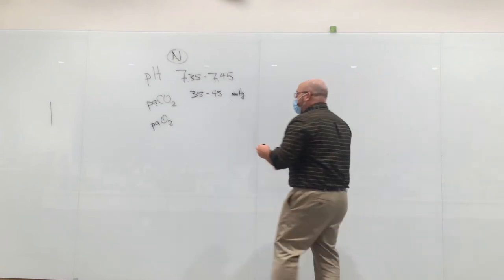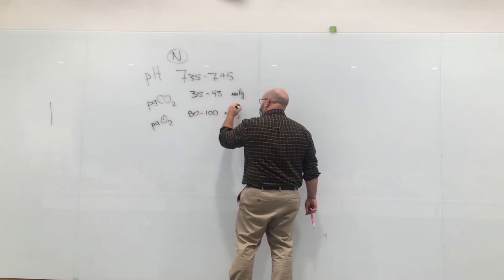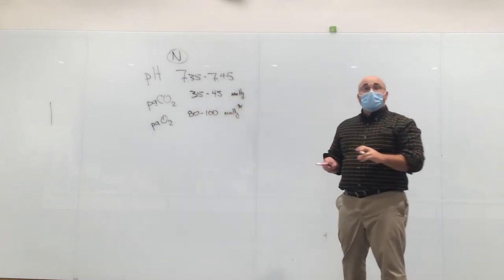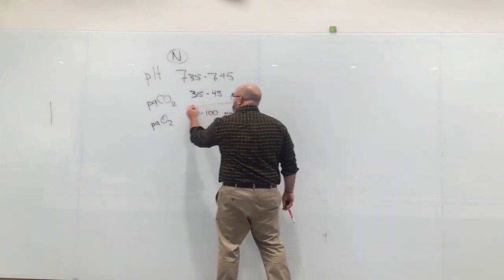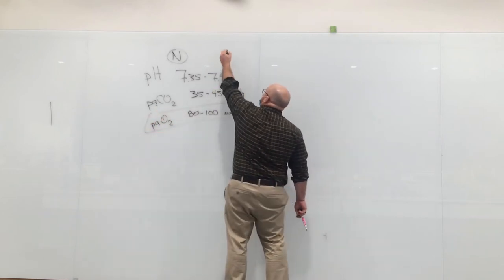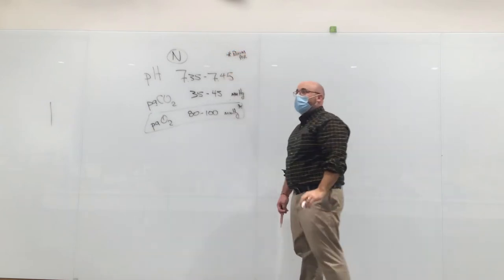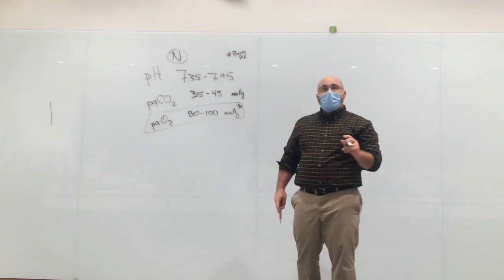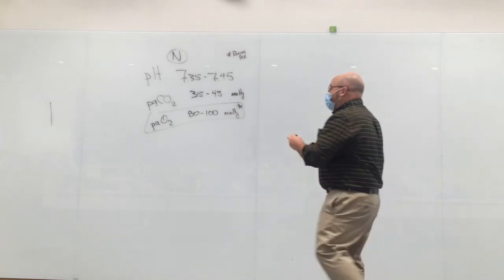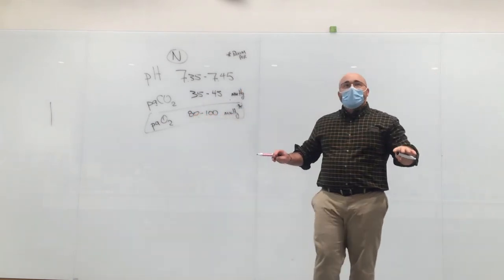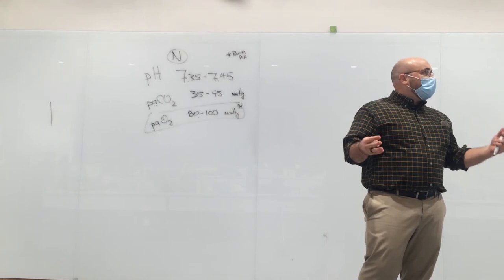Normal for PaO2 is 82–100 mmHg. I put an asterisk next to it because this value has really nothing to do with acid-base balance, but I'll give it to you on every blood gas today. The asterisk means that's on room air. That normal value will change with every fraction of oxygen you change on your patient — so a PaO2 means nothing unless you know how much oxygen the patient is on.